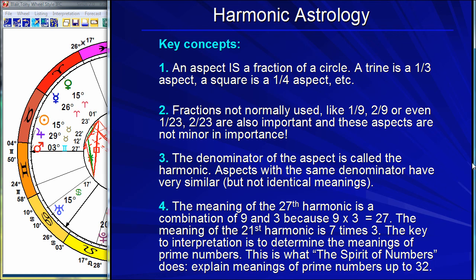When people say two planets are in ninth harmonic, it means they're one-ninth, two-ninths, or some other ninth of the circle apart. The denominator is, in a sense, more important than the numerator. All aspects with the same denominator have a similar meaning. Point four: the meaning of a harmonic like 27 is a combination of nine and three, because nine times three equals 27. A simpler example is 21 — the 21st harmonic is a combination of seven and three. So the key to interpretation is to determine the meanings of the prime numbers. What does seven mean? What does three mean? This is where the title of the book comes from — The Spirit of Numbers. The spirit or essence or quality of these prime numbers is the foundation of harmonic astrology.